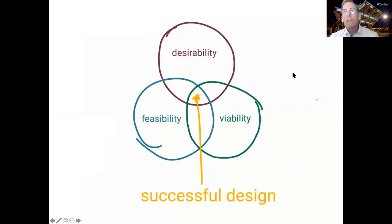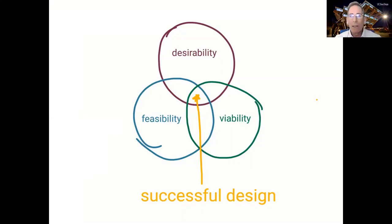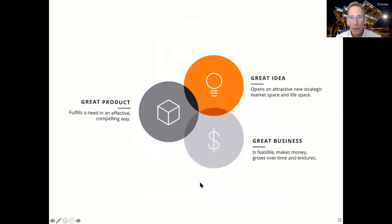One distillation of design thinking is the framework of feasibility, viability, and desirability, where they all come together. Feasibility is: can we build it? Viability is: should we build it? And desirability is: does anyone care if we build it? Each one of those steps is a very different journey, and when they come collectively together, that's where not only successful design but successful opportunities live.